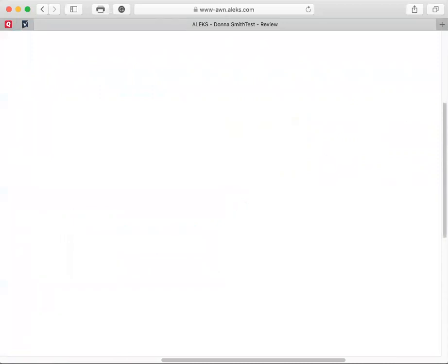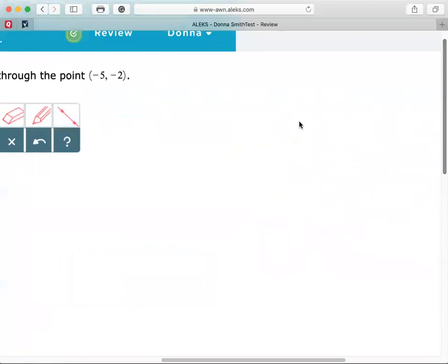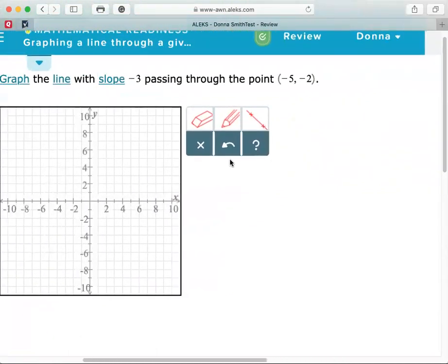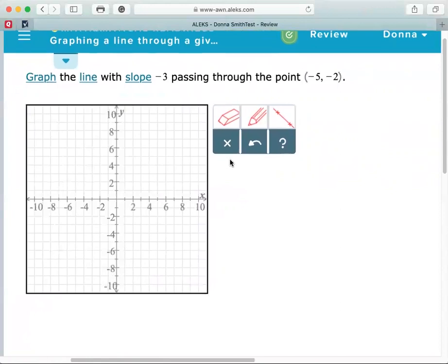In this example, we have the following. Graph the line with slope negative 3 through the point negative 5, negative 2.